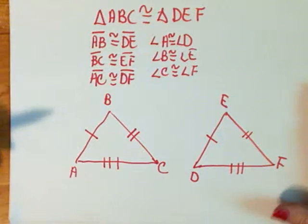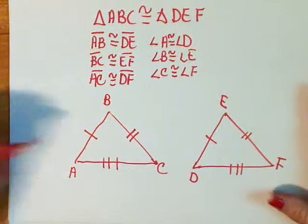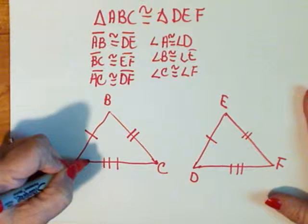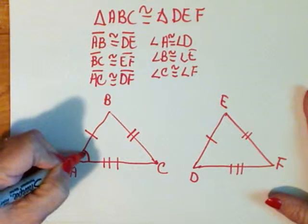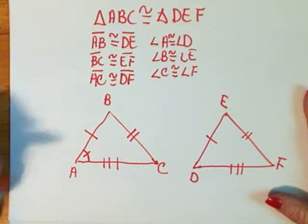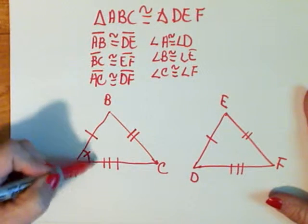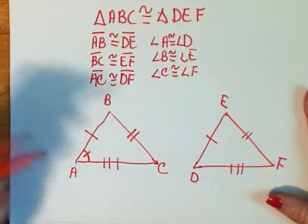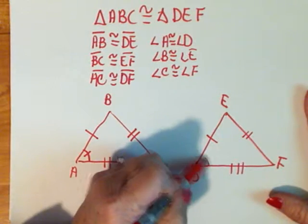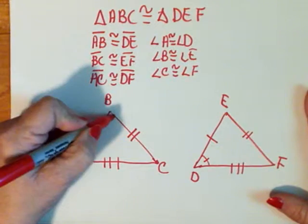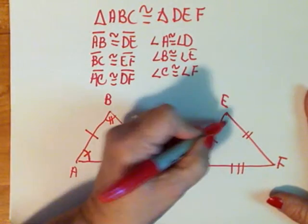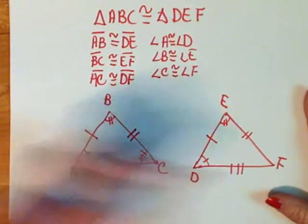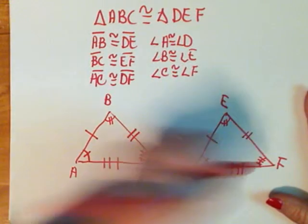Now likewise I can mark angles. Angles sometimes are shown different ways, so typically I will do just one little mark. Sometimes books will do two angle marks or one angle mark just to show that they're the same, but I like to put the little mark there. Then angle B is congruent to angle E, angle C is congruent to angle F.